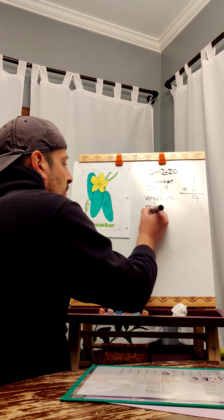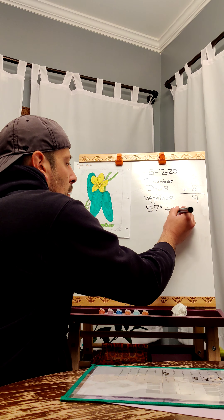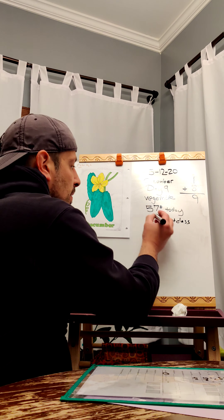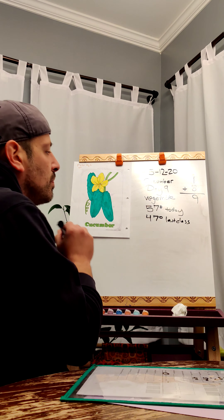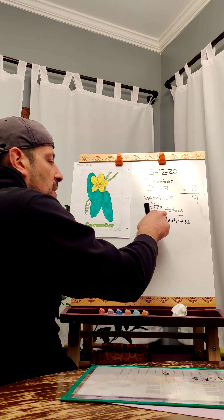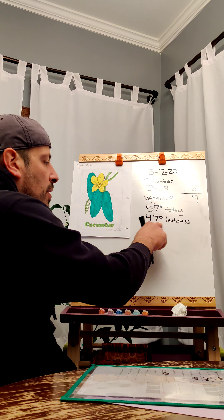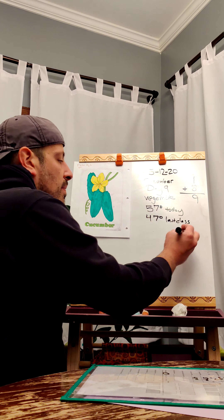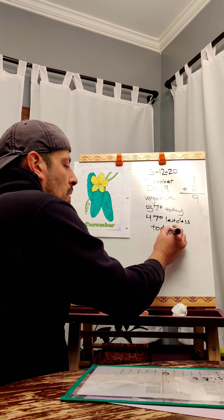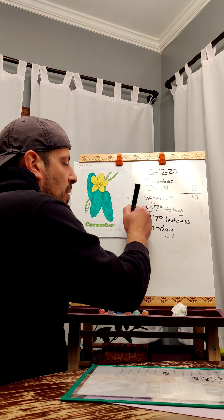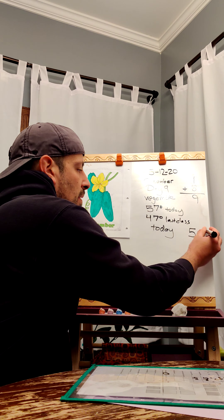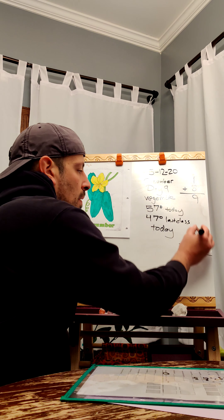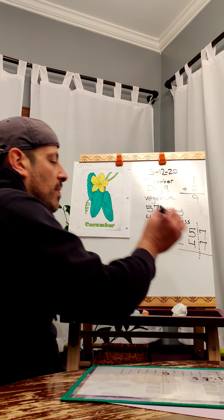Temperature today is 57 degrees. Last class it was 47 degrees. What's warmer — today's 57 degrees or 47 degrees last class? What's the bigger number? Today. So by how much? I have to subtract. I'm putting my bigger number, today: 57, take away 47.